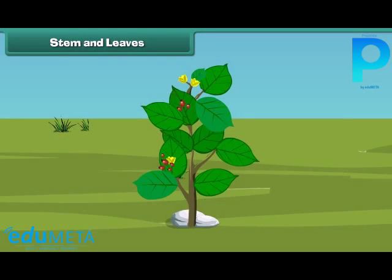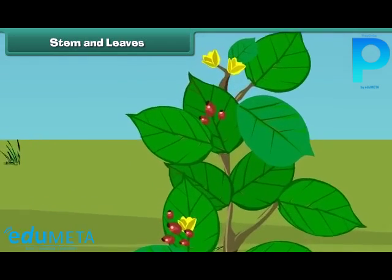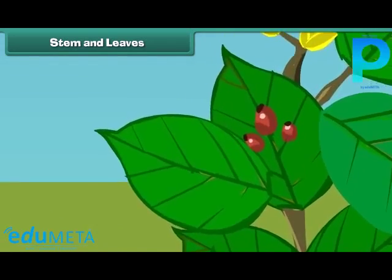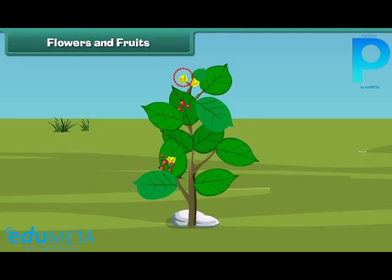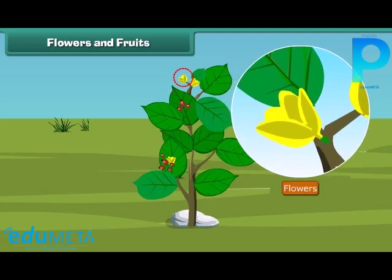Friends, do you know which part of the plant helps them to prepare food? That's right. It is the leaves. Leaves are green in color and are born out of a stem. Now let us know about the most attractive and most beautiful part of the plant. Yes, that is the flower.